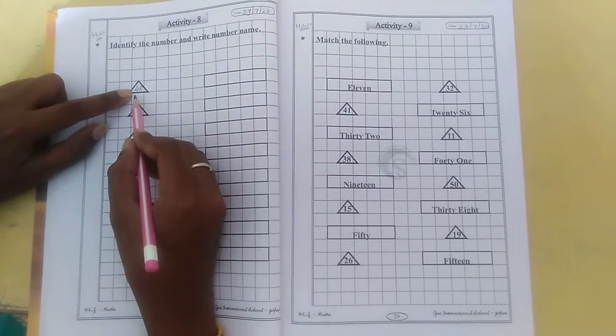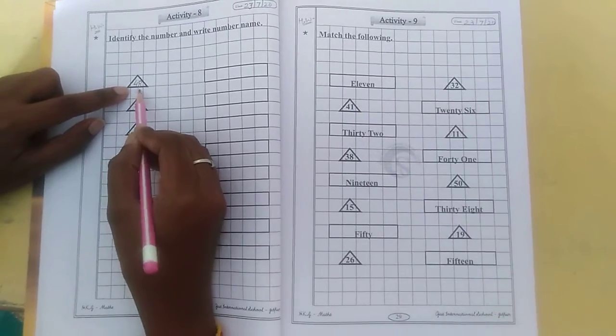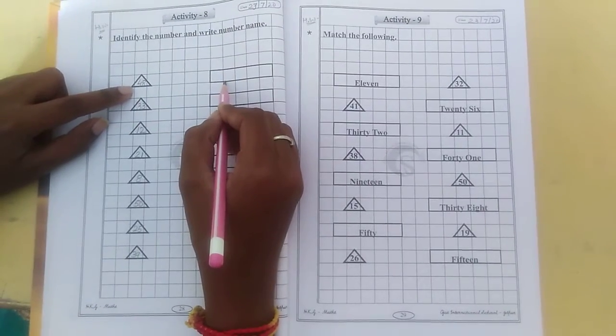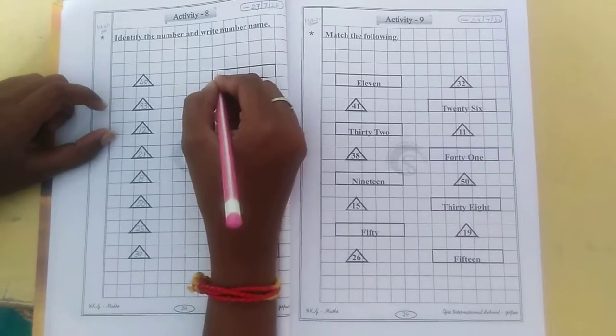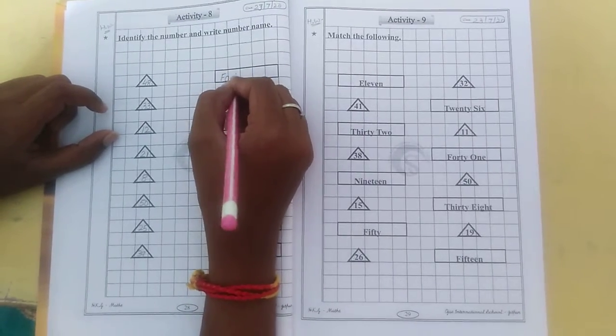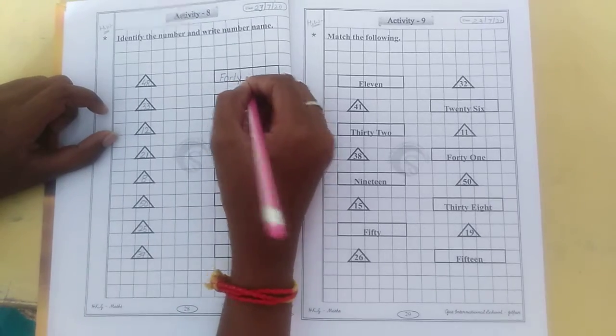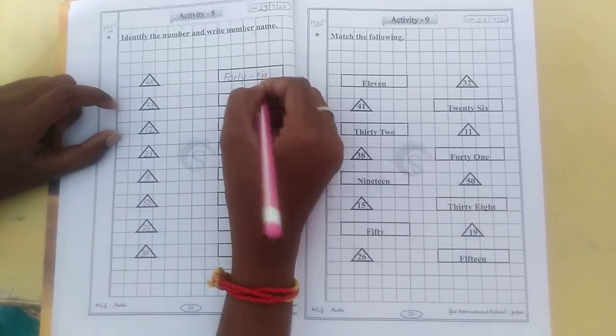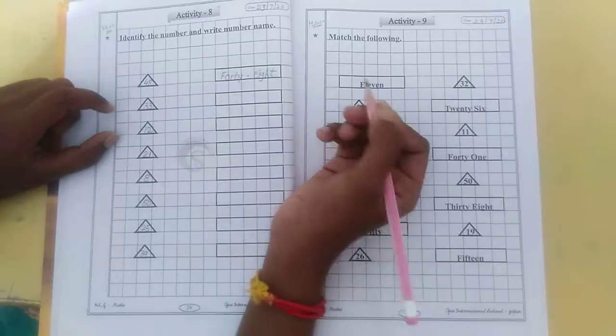You have to read this number. Look at the number first. 48. So you have to write here the spelling of 48. Like this. F-O-R-T-Y-E-I-G-H-T.